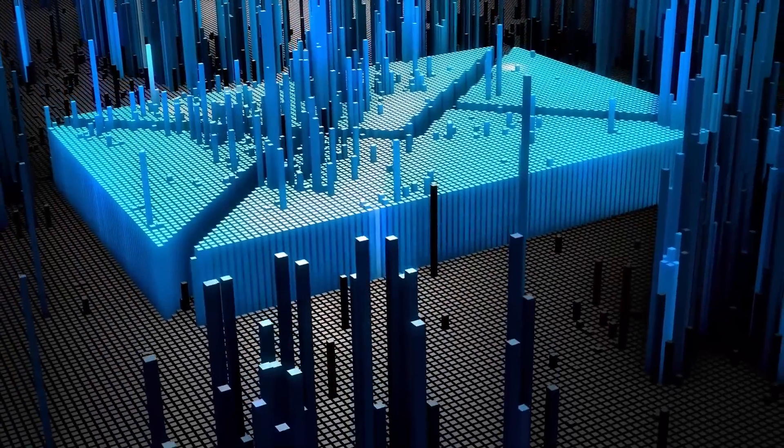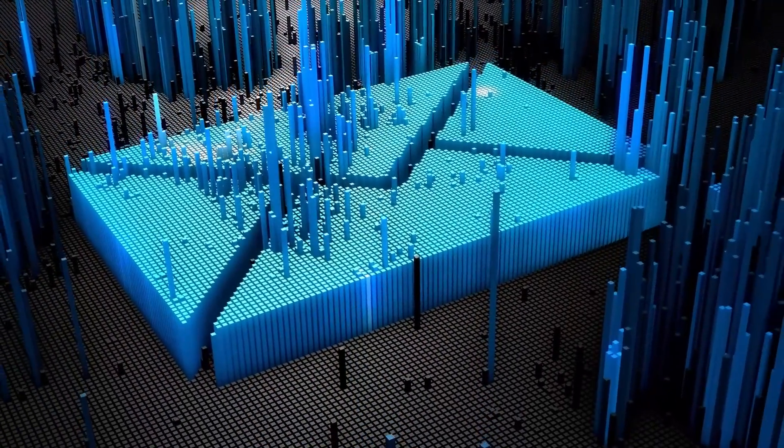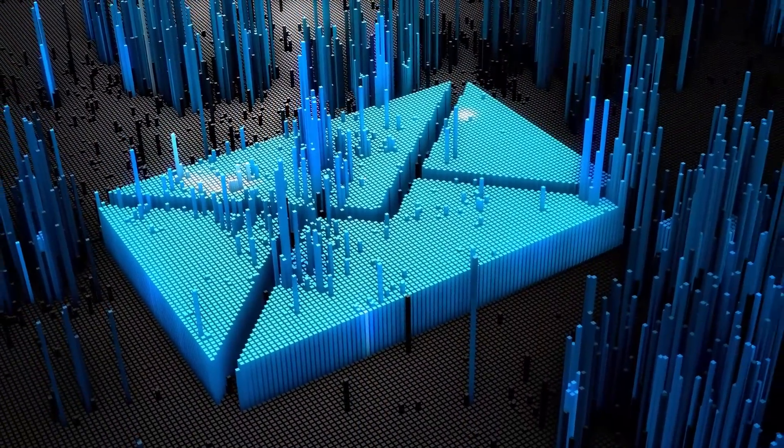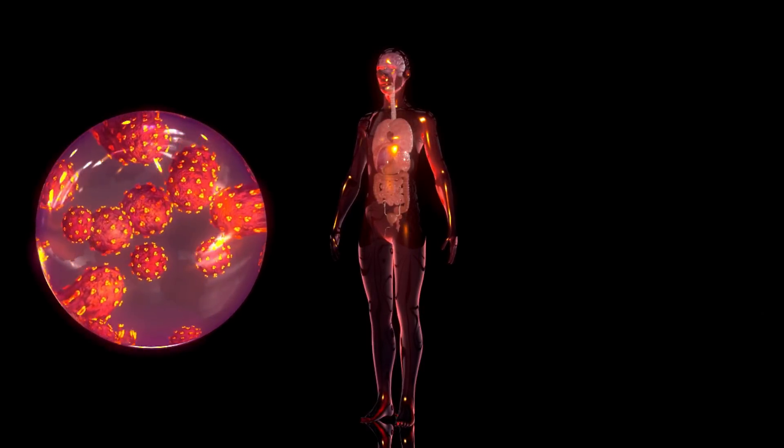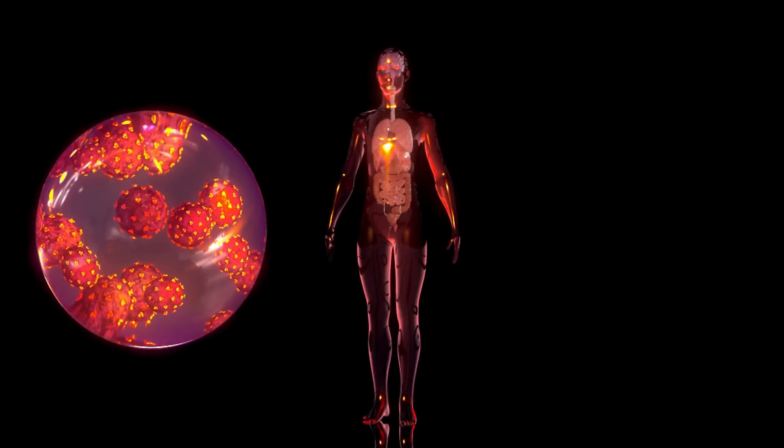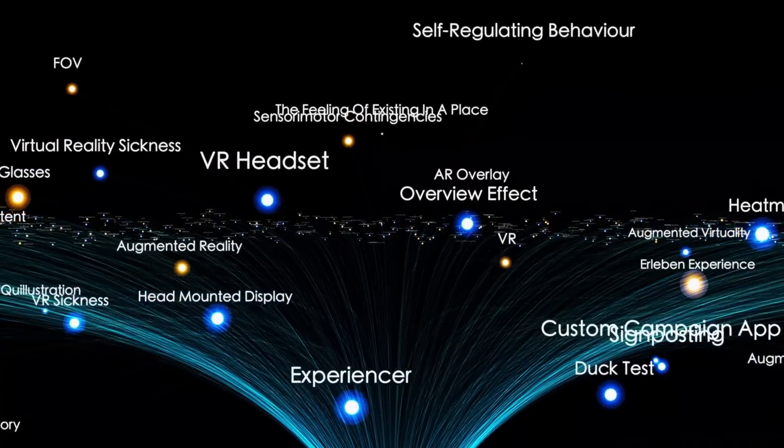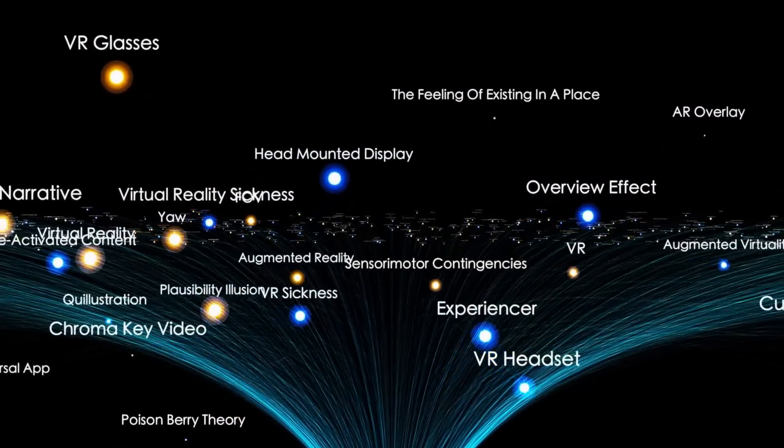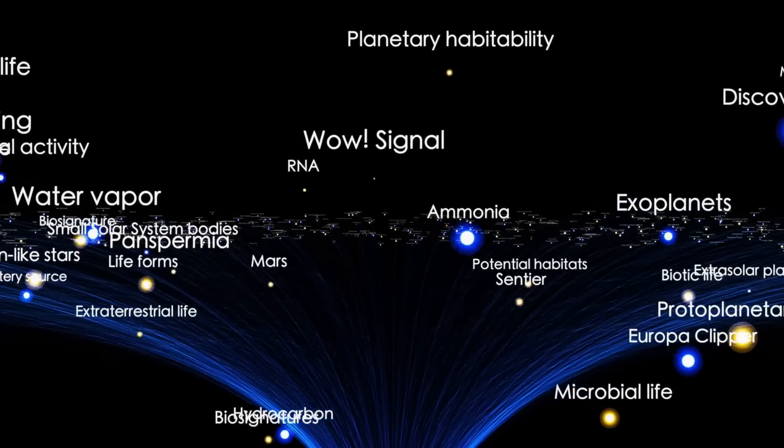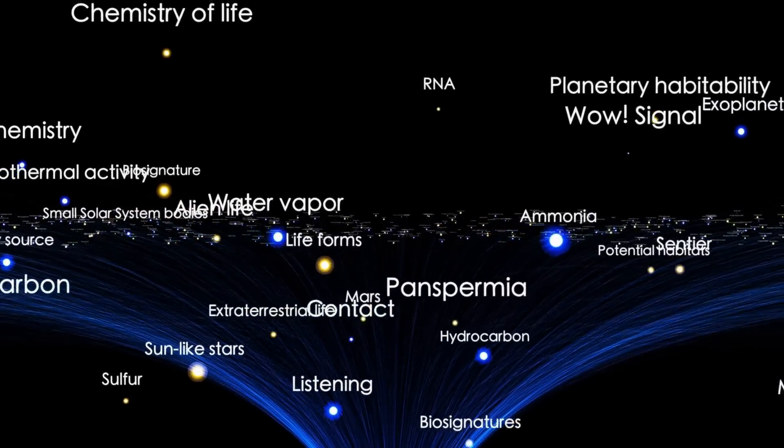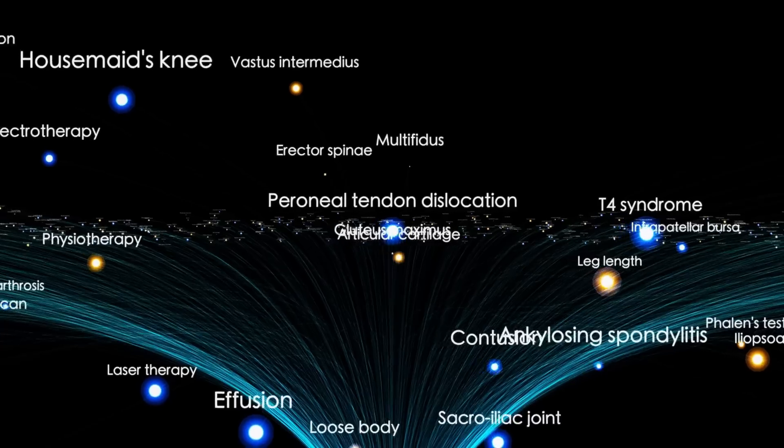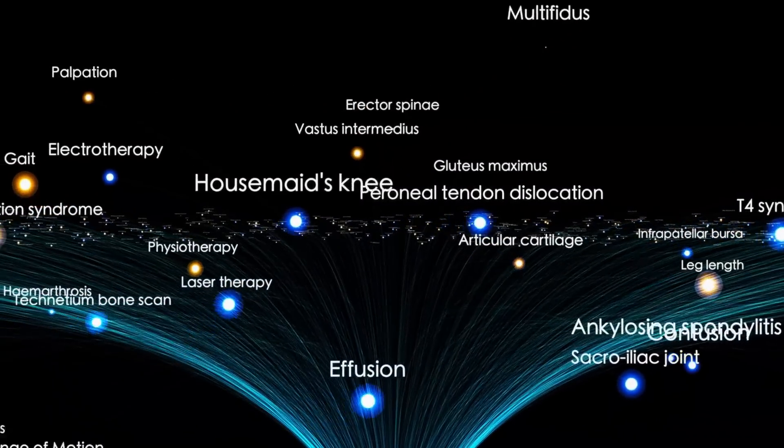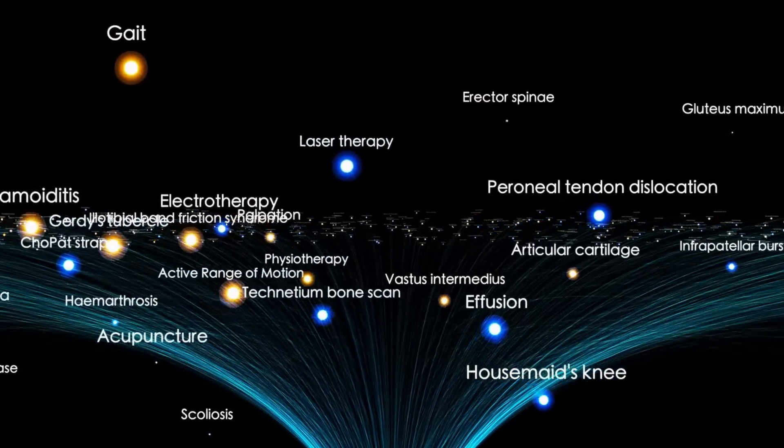The observable universe refers to the portion of the cosmos that we are capable of observing and studying using telescopes and other scientific instruments. However, this observational capability is inherently limited due to the finite speed at which light travels. Since light is our primary source of information about the universe, we can only detect objects and events that are within a certain distance from us. Consequently, we are unable to directly observe occurrences or celestial bodies that took place or formed very early in the universe's history, billions of years ago.